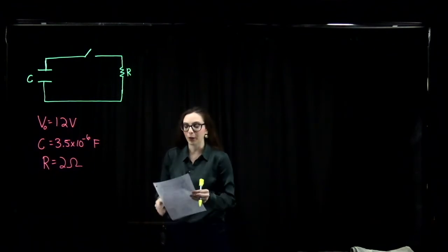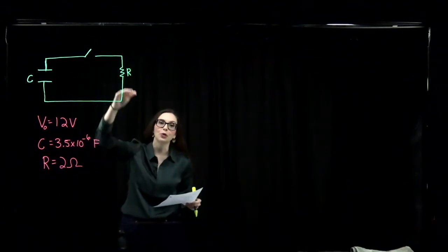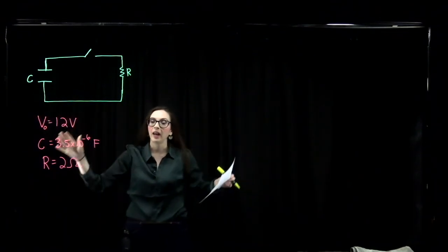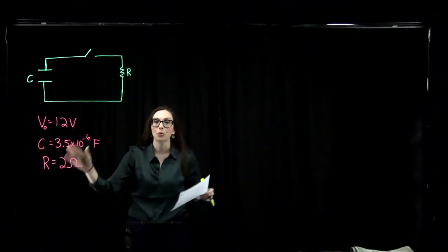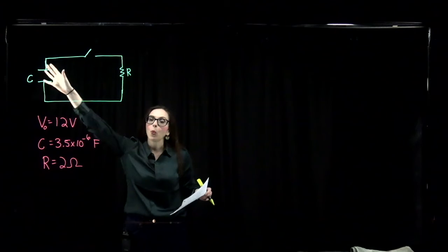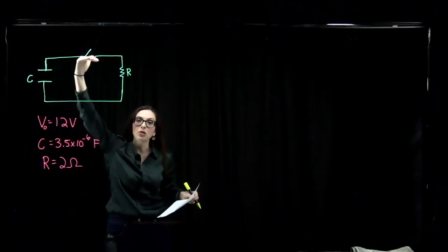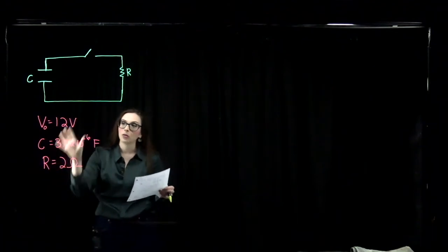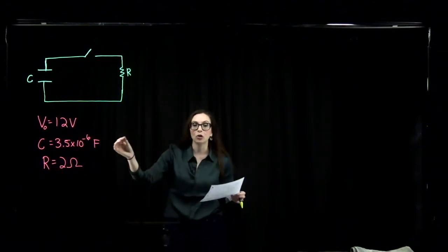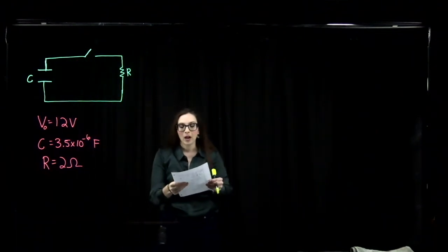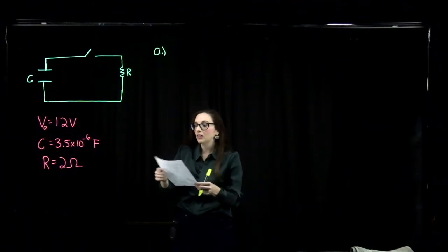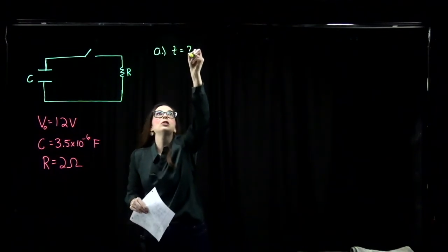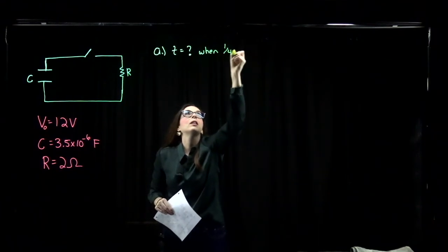Now let's treat a discharging capacitor problem. A capacitor has been fully charged to a potential of 12 volts across its plates, with a capacitance of 3.5 times 10 to the minus 6 farads. We are going to close the switch and discharge this capacitor through a resistor with a resistance of 2 ohms. We want to find how long it takes for the charge on this capacitor to drop to one-fourth of its initial value.